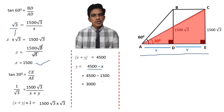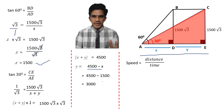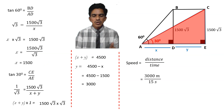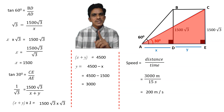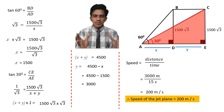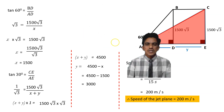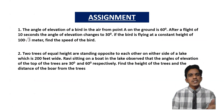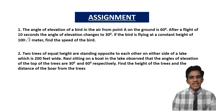Now we can calculate the speed. Speed equals distance by time. Here the distance traveled by the jet plane is 3000 meters and the time taken is 15 seconds. So speed equals 3000 by 15, which equals 200 meters per second. Therefore, the speed of the jet plane is 200 meters per second. This problem involved both maths and physics. These are your assignment problems for today — solve them and post the answers as early as possible. Thank you.